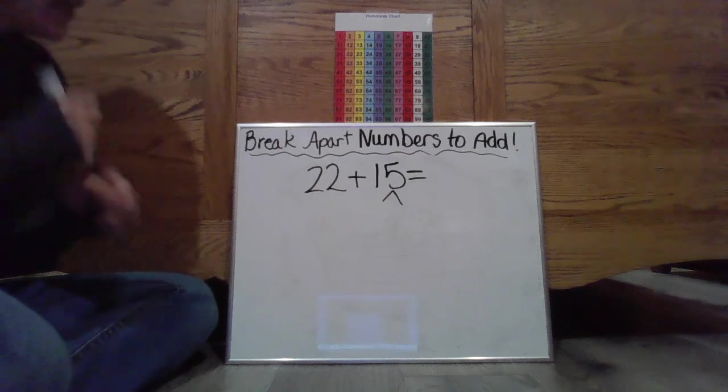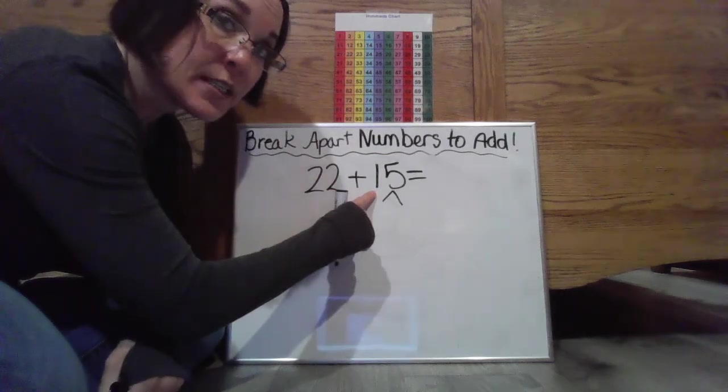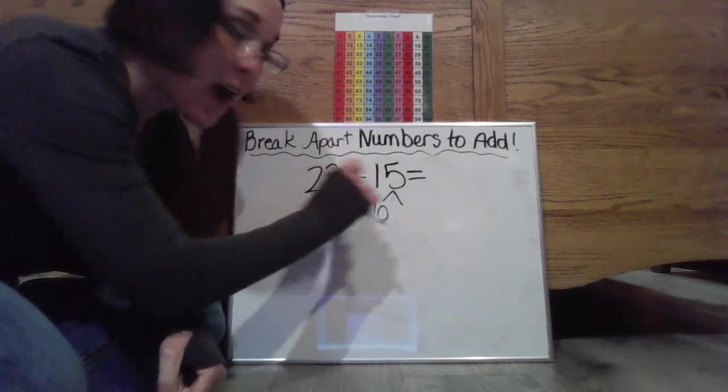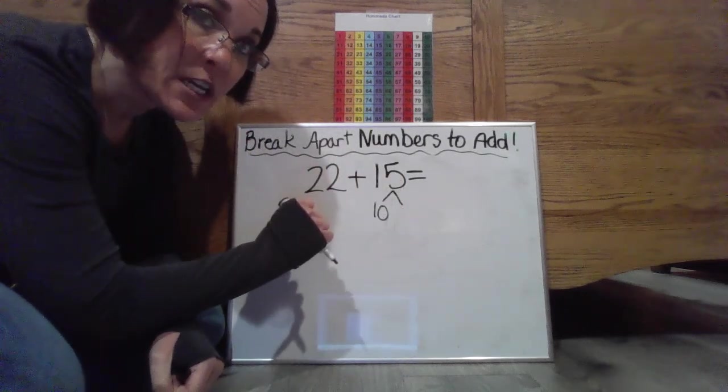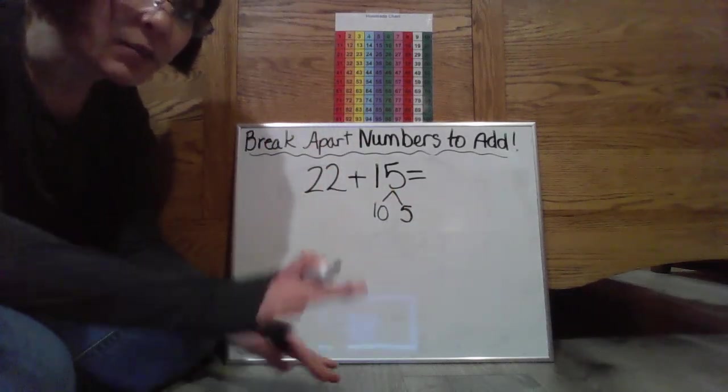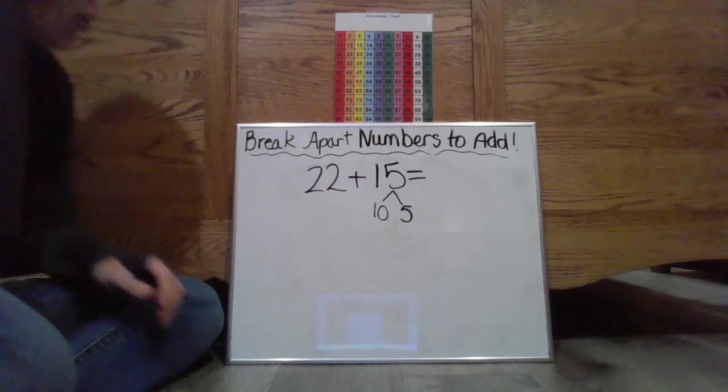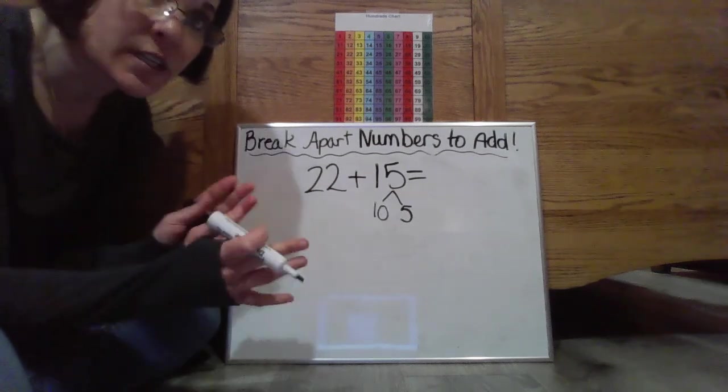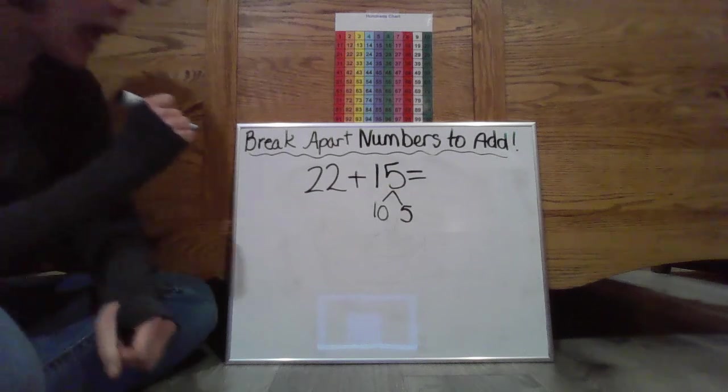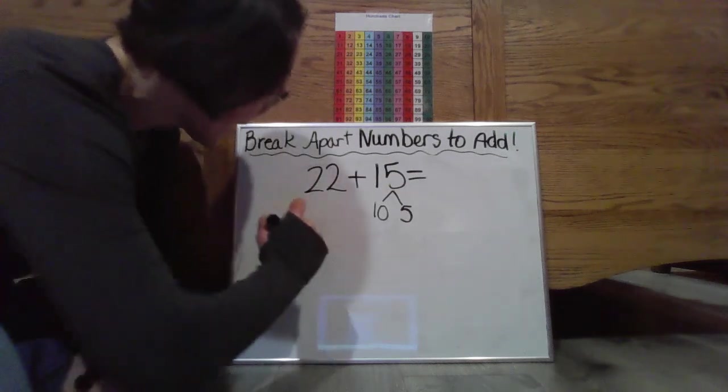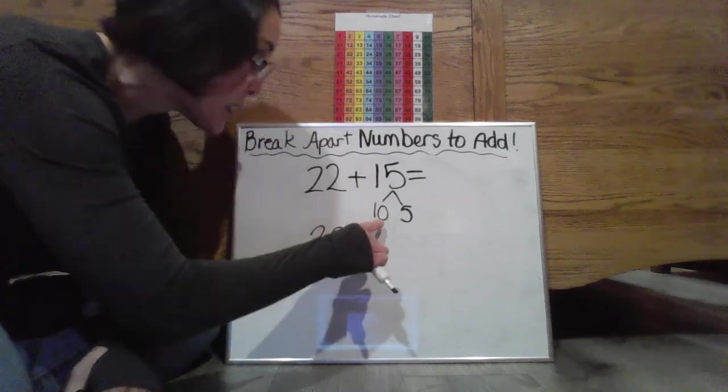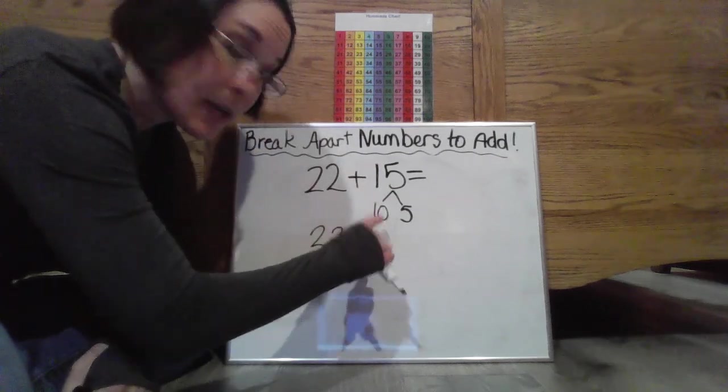So one ten stick would just be equal to 10. Five ones blocks would just be equal to 5. And that's it. You broke it down. So what I want to do now I want to start establishing those other number sentences to help me find that last number to help me find that sum.